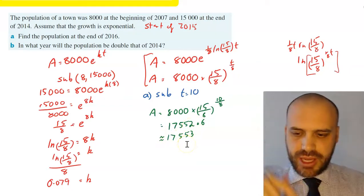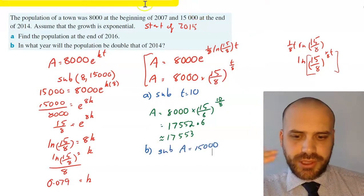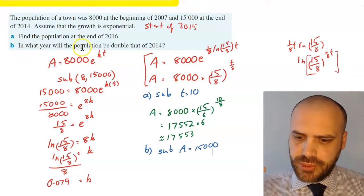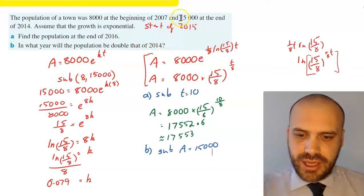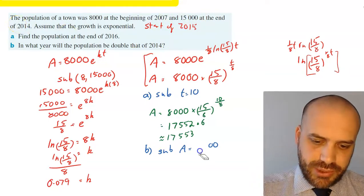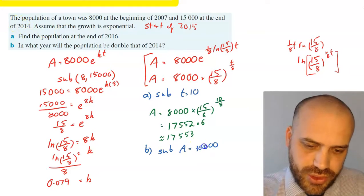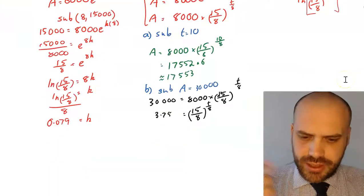And then part b, slightly more difficult because we'll have to rearrange here. Now be careful because it says, in what year will the population be double that of 2014? So it says 15,000 at the end of 2014. We want double that, so we want 30,000. So we're going to sub 30,000 in for A.